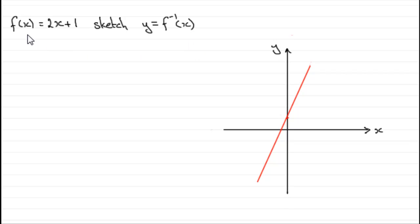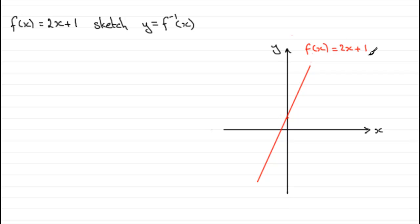First of all, let's suppose we've got the graph f of x equals 2x plus 1 and we're asked to sketch y equals the inverse function, f to the minus 1 of x. Over here is the graph of f of x equals 2x plus 1 — it's a straight line graph. It crosses the y-axis at 1, and if we set f of x equal to 0 we find that x equals minus 1, so it crosses the x-axis at minus 1.